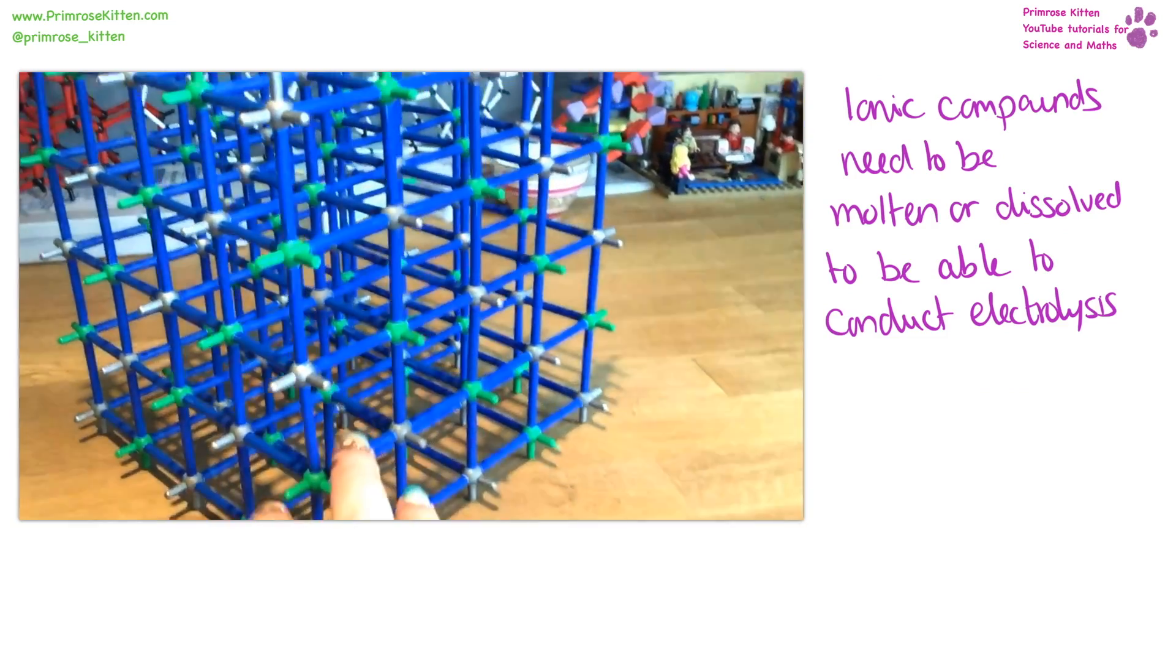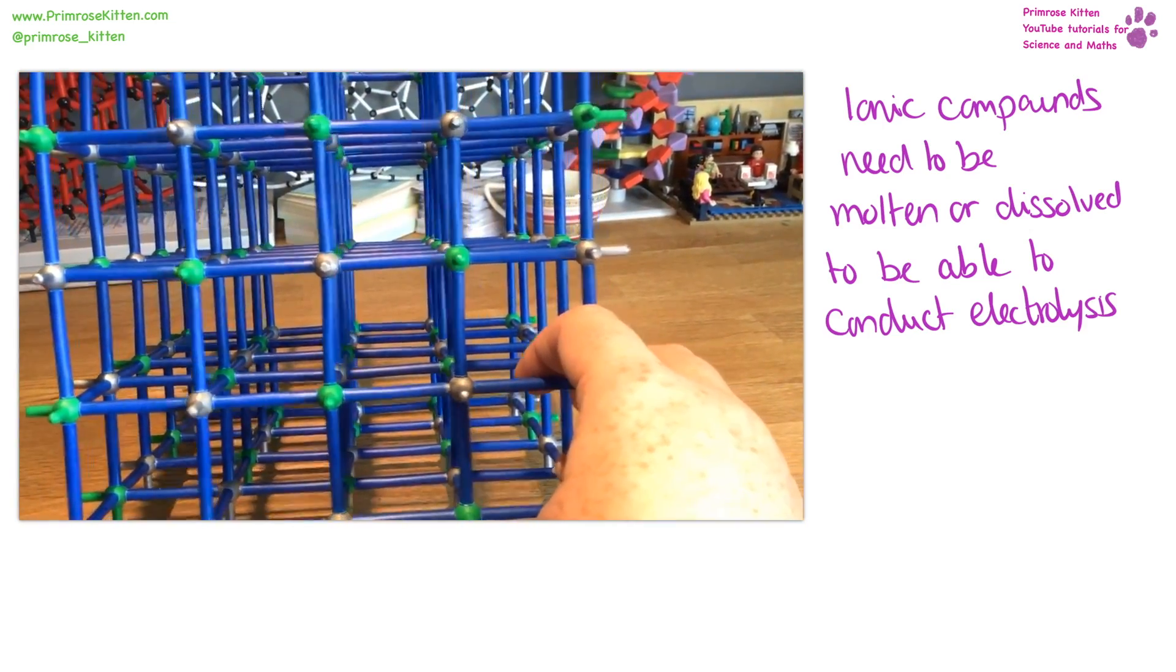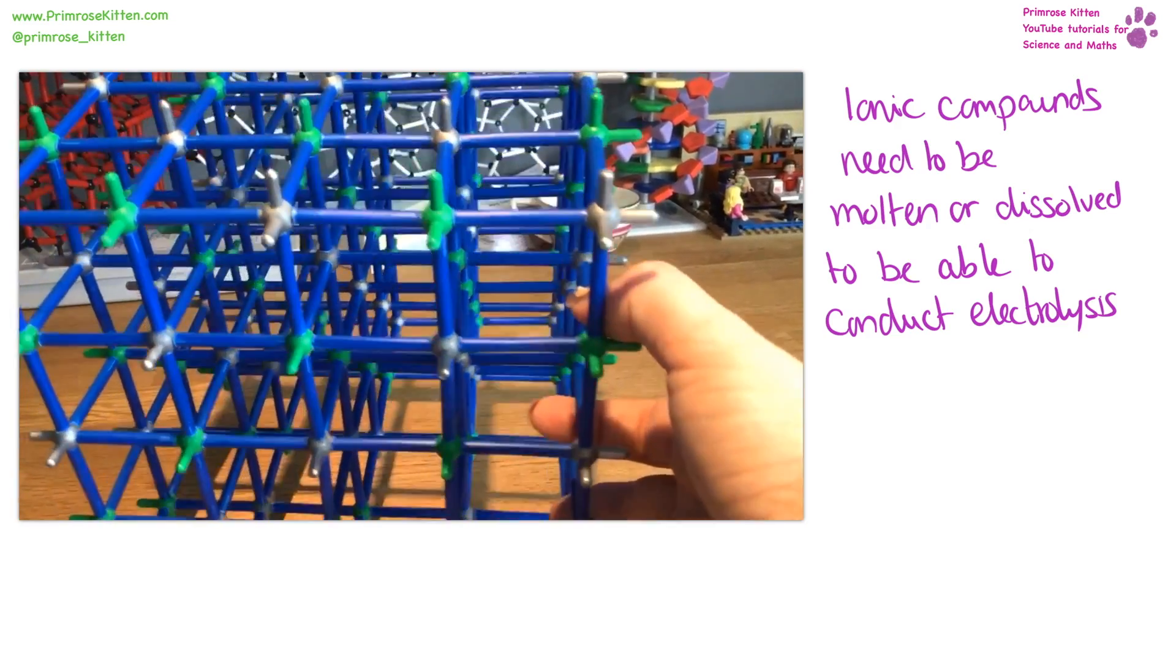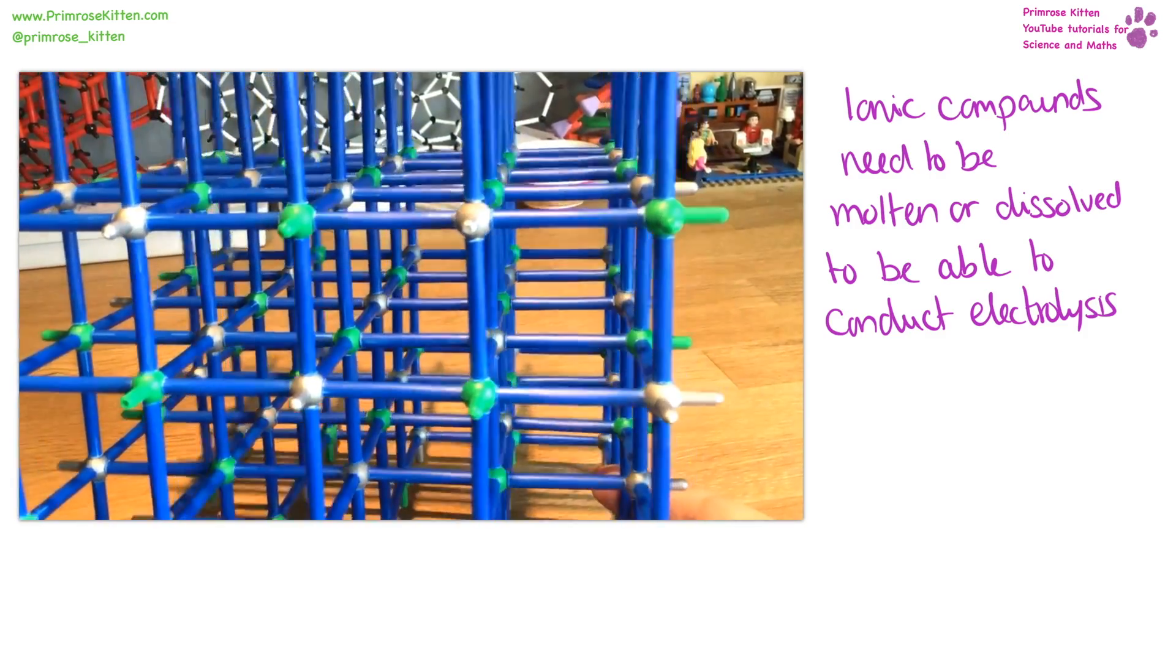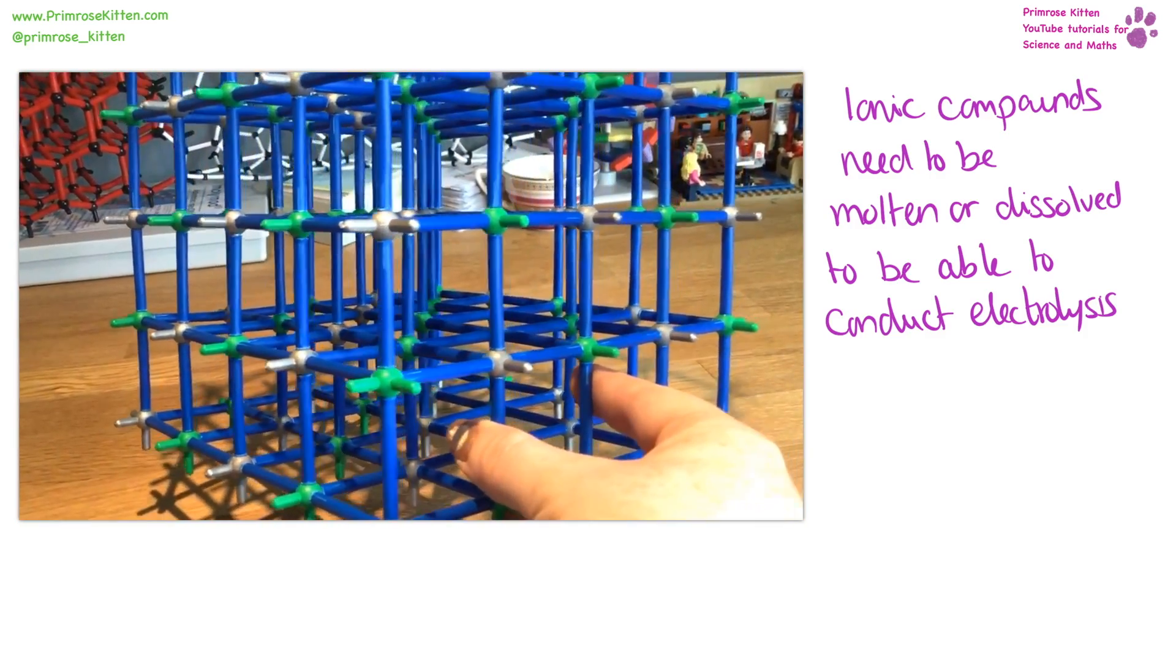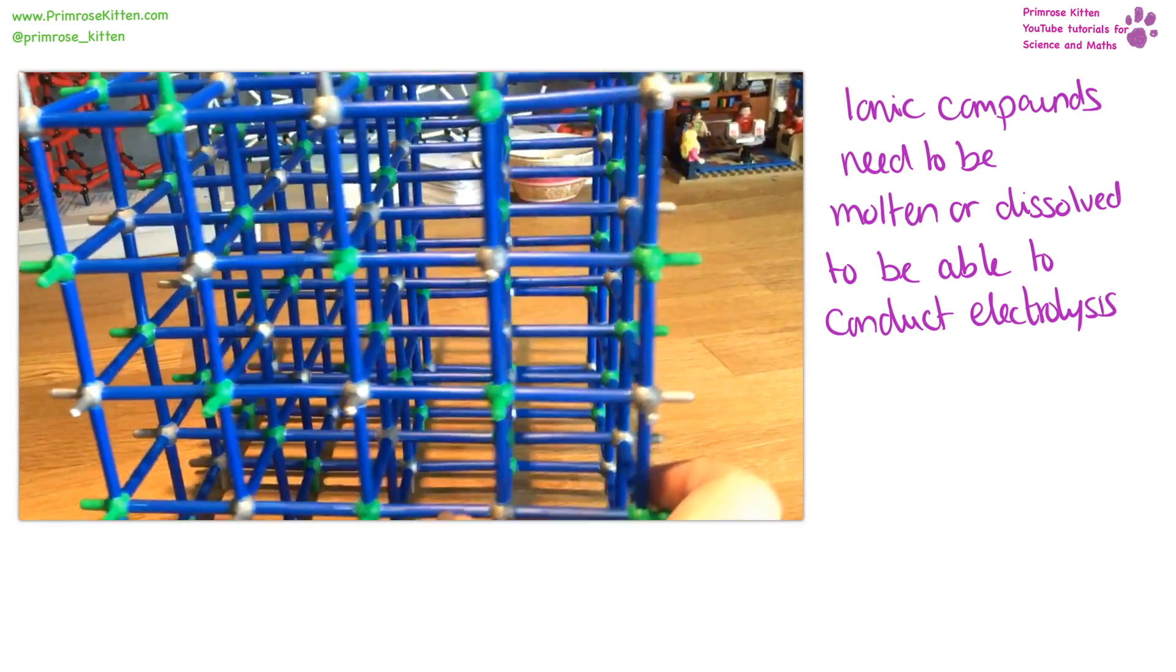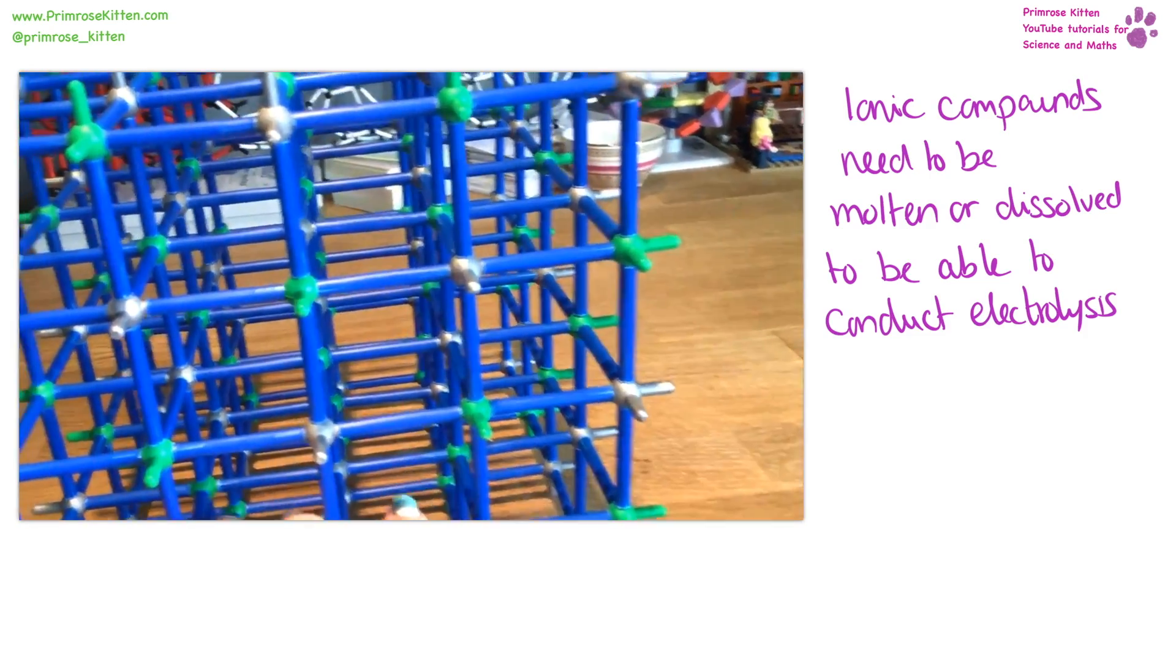Here we have sodium chloride. Now ionic compounds have to be molten or dissolved to be able to conduct electricity. Because when it's in a solid state, you can see that this sodium and these chlorines are not going anywhere, they're very fixed. However, in a liquid or a molten or dissolved state, when these ions are free to move around, that is when they're going to be conducting electricity and that's when you can do electrolysis.